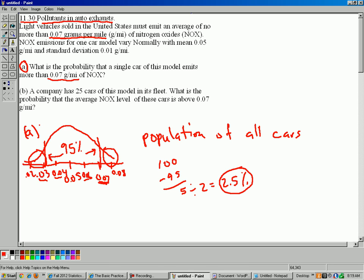Now that's not a chapter 11 question. That was just a chapter 3 question. Now part B is a chapter 11 question, because this is talking about a sampling distribution. So a company has 25 cars of this model in its fleet. So we'll just pretend that's a random sample of cars. They just randomly get 25 cars that they order from the dealer. So we'll pretend that it's a sample of 25 cars. Let's write part B, n equals 25.